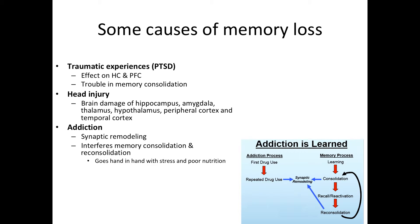Other causes of memory loss are PTSD, head injuries, and addiction. PTSD has an effect on the hippocampus and the prefrontal cortex and causes issues with converting short-term memories into long-term memories, so there is trouble with memory consolidation. Head injury can cause all kinds of impairments, but specifically damage to the hippocampus, amygdala, thalamus, or other structures will also cause memory loss. Addiction causes memory loss and goes hand in hand with stress and poor nutrition — it interferes with memory consolidation, and when recalling memories there will be trouble re-consolidating that memory.